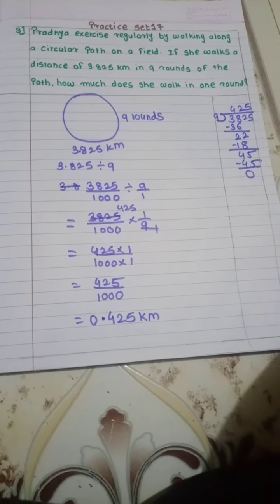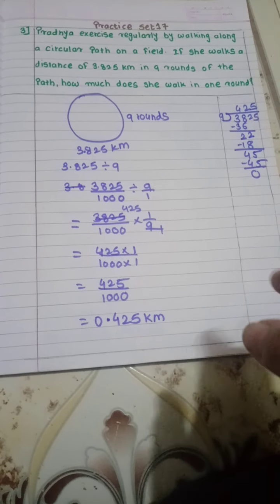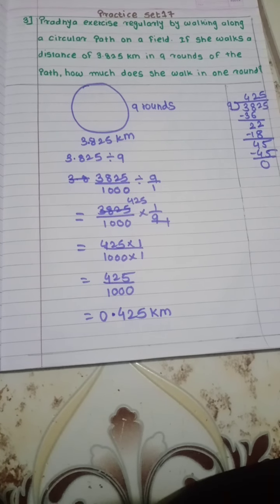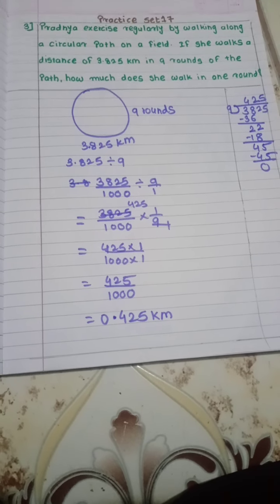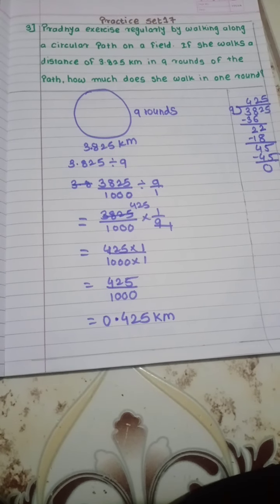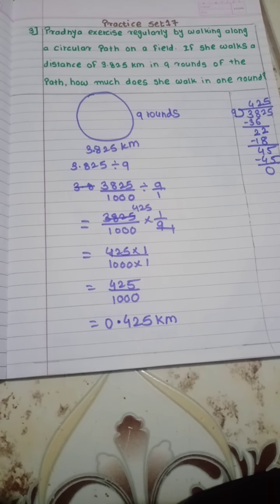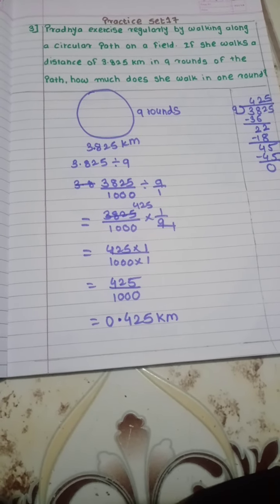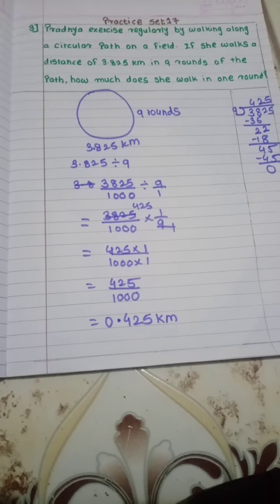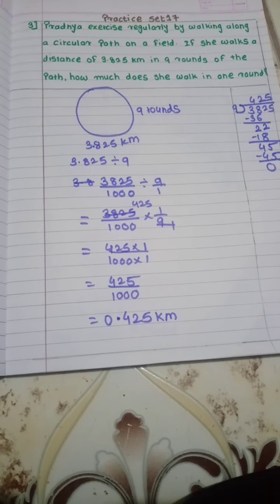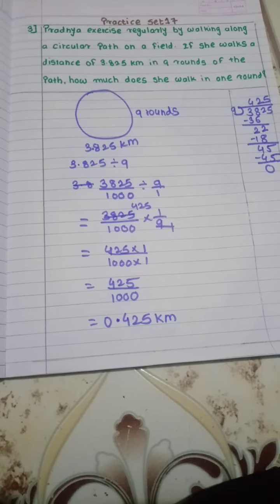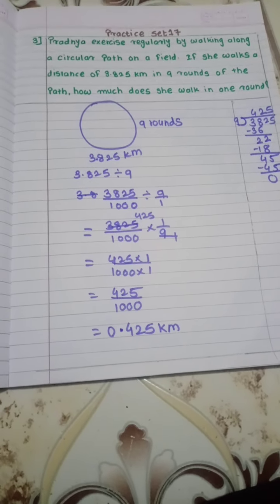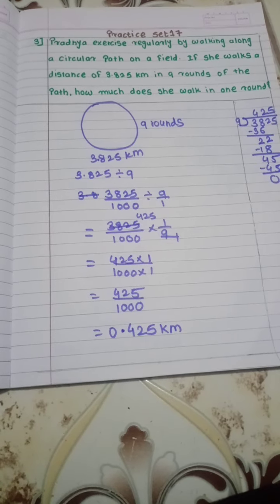Now in practice set sum number 4, you have to do it as homework. So we have completed practice set 17, and with this your lesson number 5 on decimal fractions has also been completed. Copy all the practice sets in your notebook. Thank you and take care.